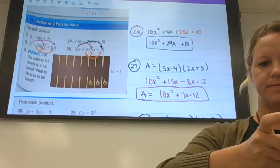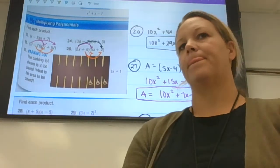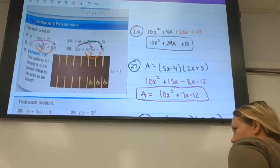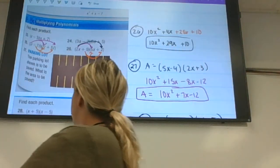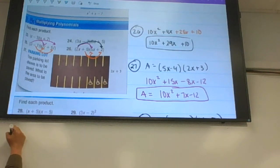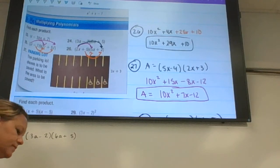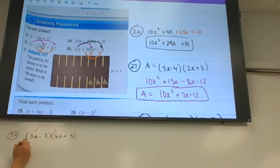I'm gonna start on 24, I'm on 13. 24 again is FOIL. So we would do 3a times 6a first, and 3a times 5.